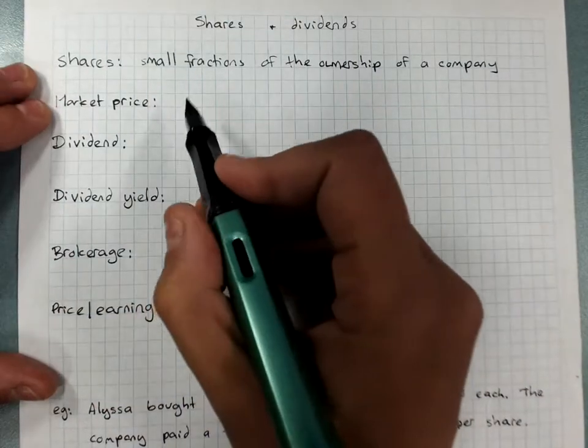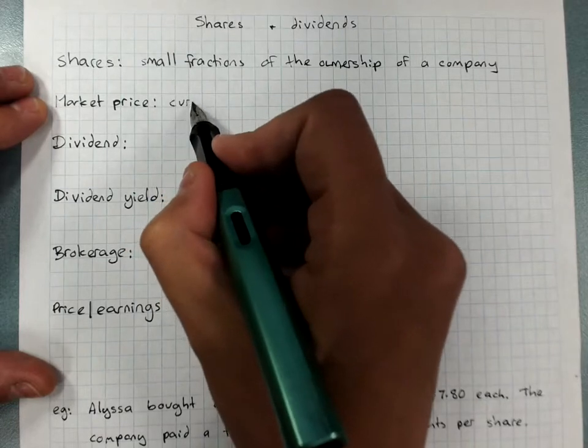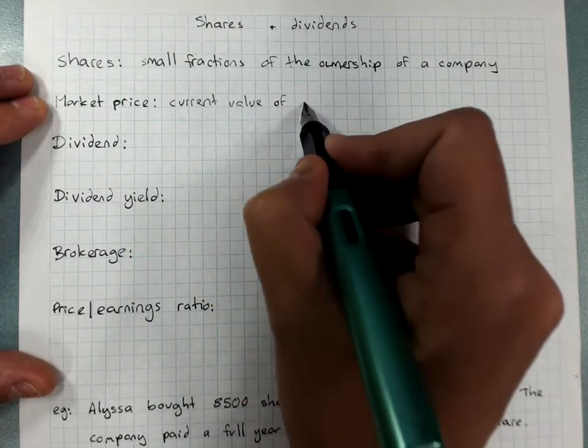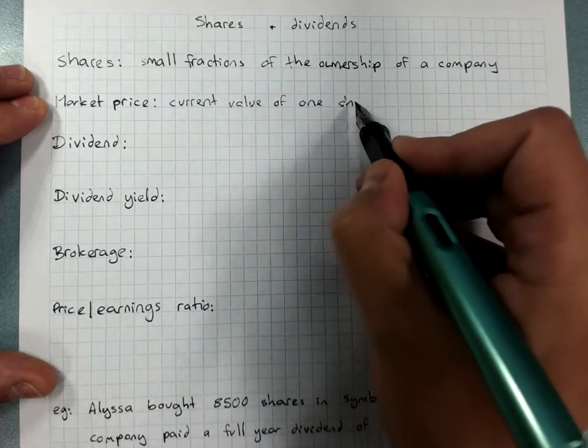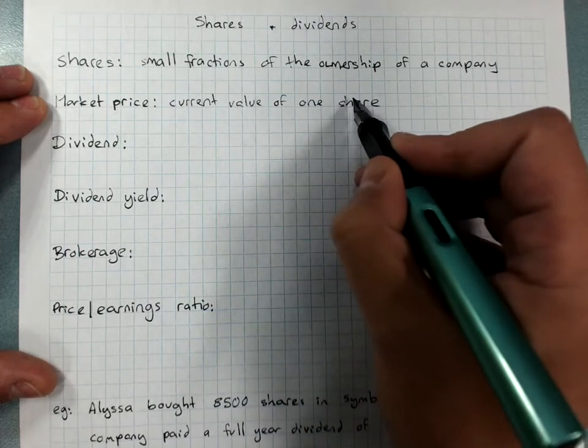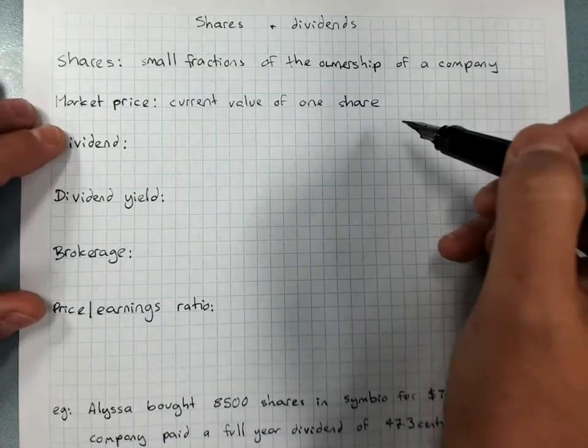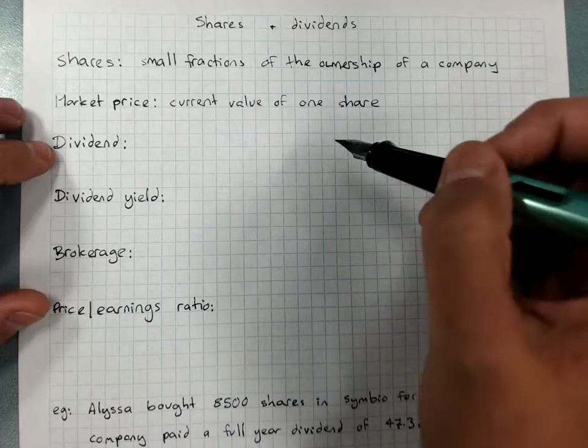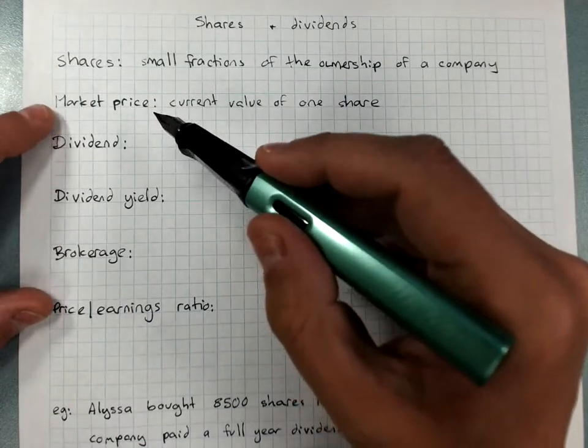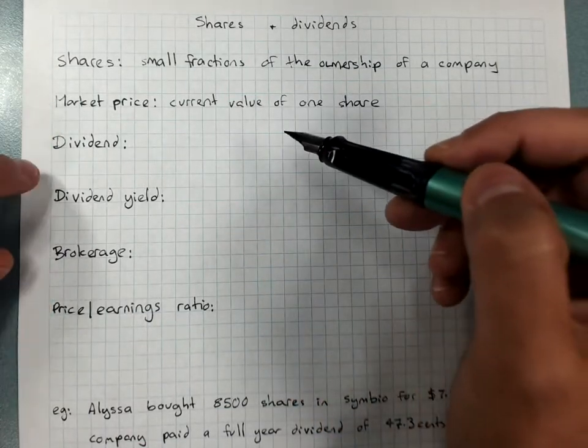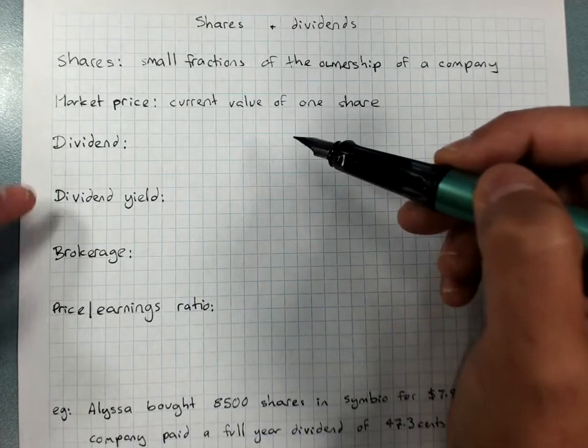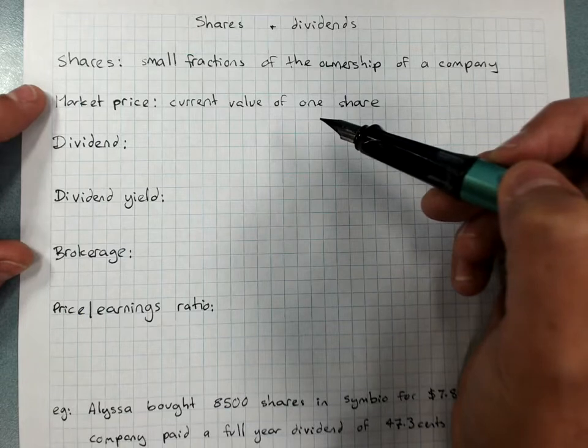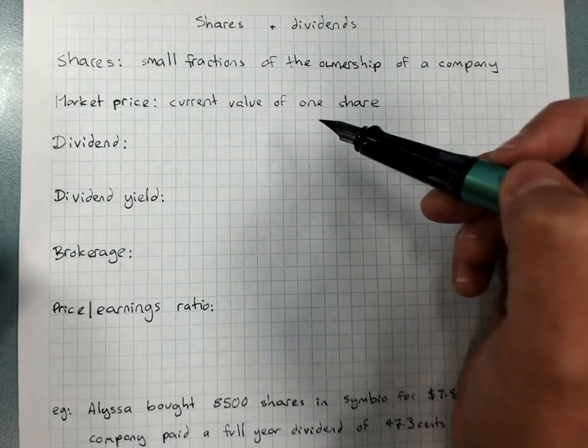The market price is the current value of one share, often called the market value. Most people won't own one share in a company, they'll own multiple shares. Price can go up or down depending on the demand for a share, how many people want to buy it or sell it, how people think the company is going to go. If they think the company will do well and make profit, the price might go up per share.